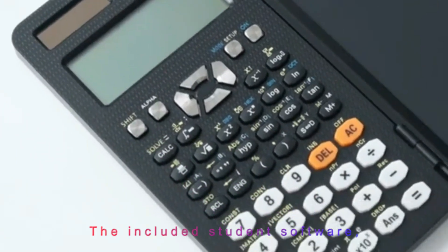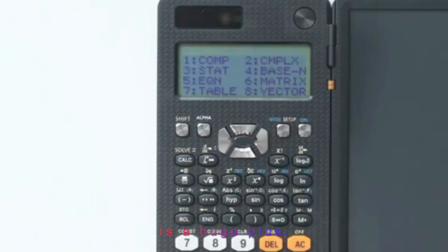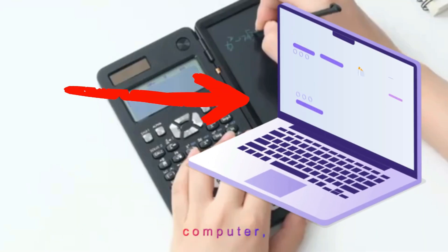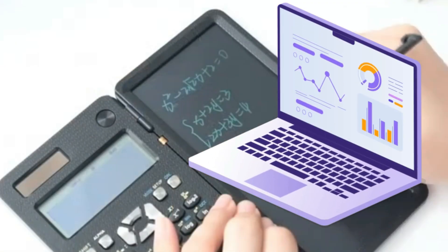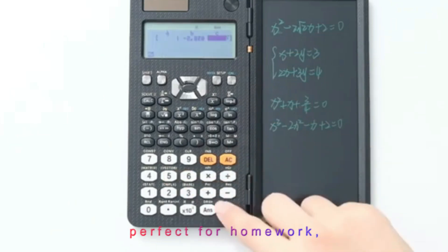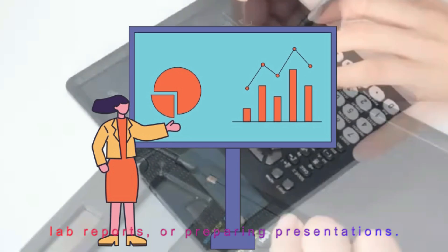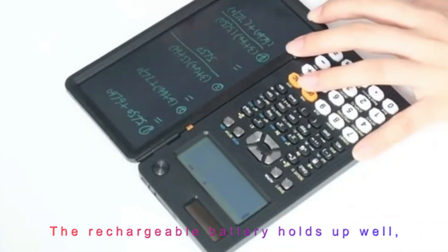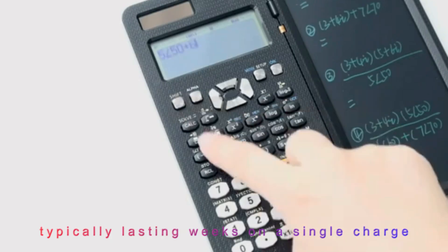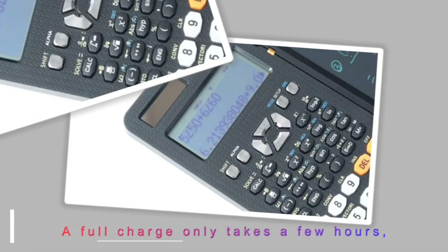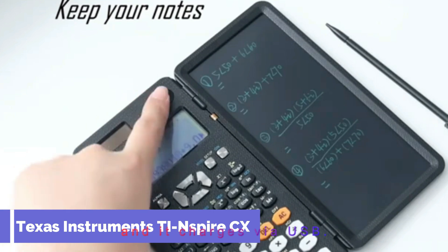The included student software, PC-Mac, is a huge plus. It replicates the calculator on your computer, making it easy to type, visualize, and organize work. Perfect for homework, lab reports, or preparing presentations. The rechargeable battery holds up well, typically lasting weeks on a single charge with moderate use. A full charge only takes a few hours, and it charges via USB.